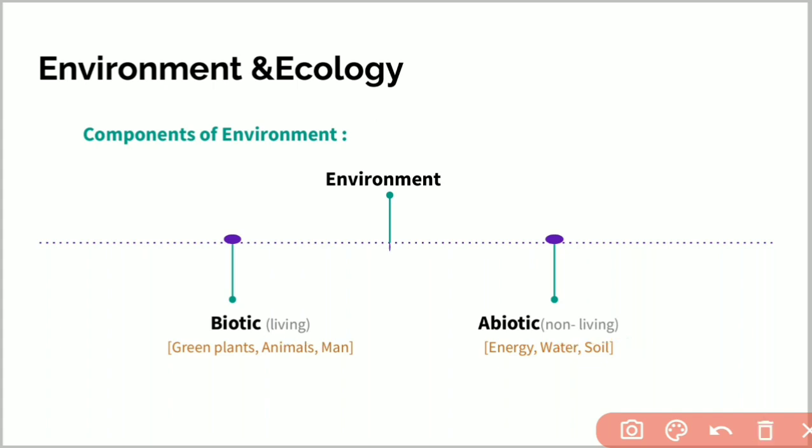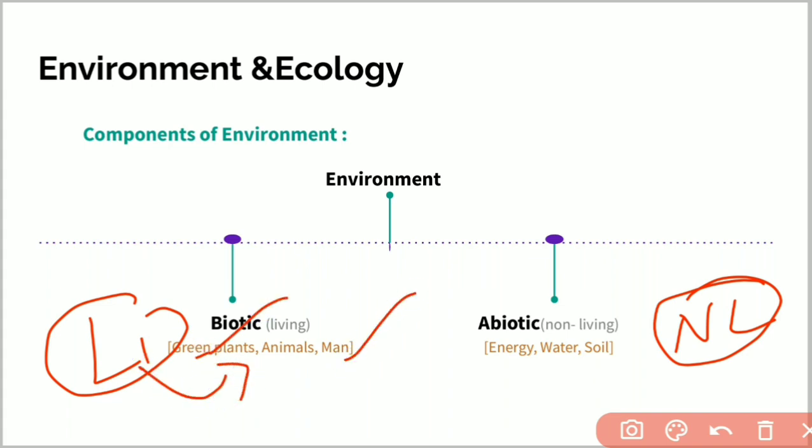Biotic components in the environment include green plants, non-green plants, decomposers, parasites, and man and animals.